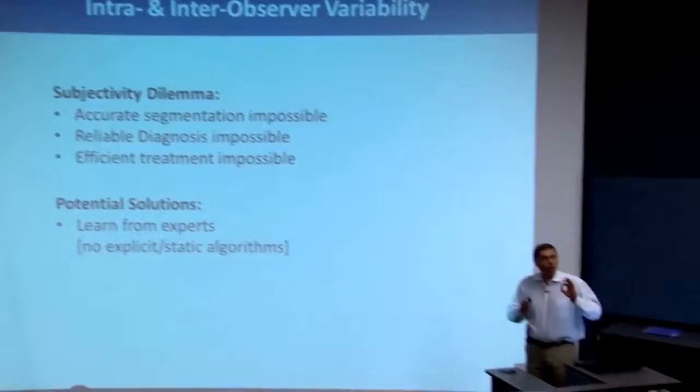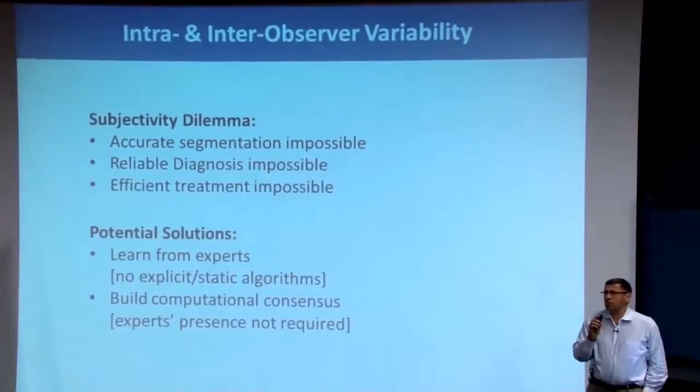The potential solution is that we have to learn from experts. We have to give up our ego in academic research — give up inventing the super algorithm for segmentation. We have to put the expert at the center of the calculation: no explicit static algorithm, but learnable, flexible platforms that the expert can rely on and that can learn from the expert. Building computational consensus appears to be the only way to address the variability issue — learning from experts and, in their absence, building things on their behalf and constructing consensus.